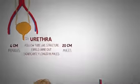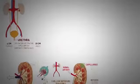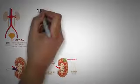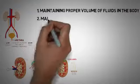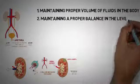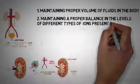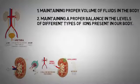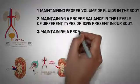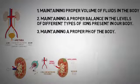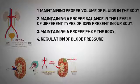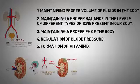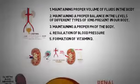Besides excretion, the kidney has many other important roles: maintaining a proper volume of fluids in the body, maintaining a proper balance between the levels of different types of ions, maintaining a proper pH of the body, regulation of blood pressure, and formation of important vitamins like vitamin D. So this was about the role of the urinary system in the process of excretion.